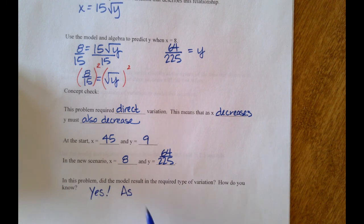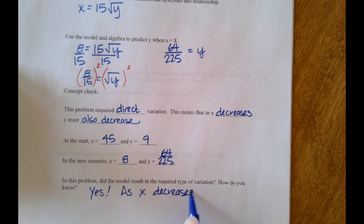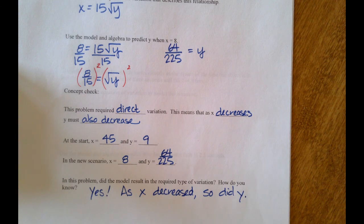And the reasoning: as x decreased, so did y. And that's not a perfect double check, it's just that we have the required type of variation that was given in the problem.